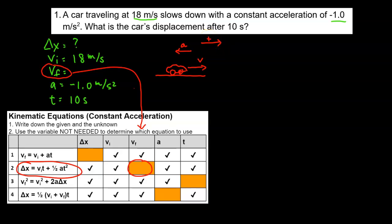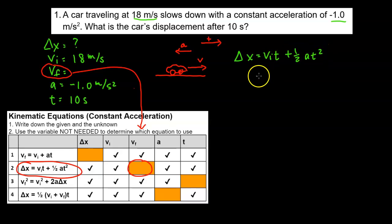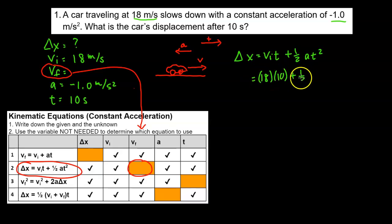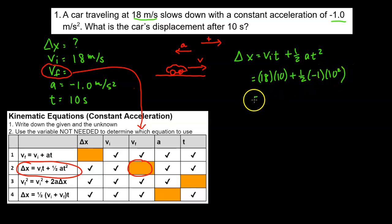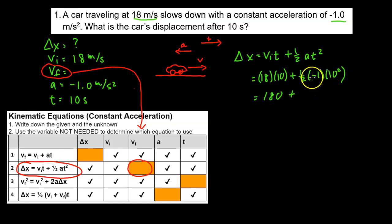Now we write down our equation: delta x equals vi·t plus one-half a·t squared. Substituting: vi is 18, t is 10, plus one-half times acceleration negative 1, times 10 squared. We square that first before multiplying: 10 squared is 100, divided by 2 is 50, but that's negative 50. So 180 minus 50 is 130.